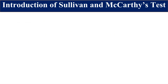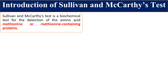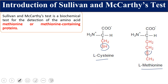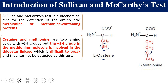We will see the procedure, definitions, results, and interpretation. This Sullivan and McCarty test is a biochemical test for the detection of amino acid methionine or any protein which contains methionine. Normally there are 20 amino acids which make protein, and out of those 20, two amino acids contain sulfur: cysteine and methionine. The sulfur in cysteine is a terminal SH group called the sulfhydryl group, while methionine contains an in-chain sulfur called thioether sulfur. Both behave differently and their reactions are also different.